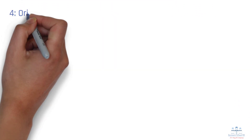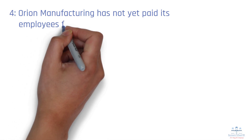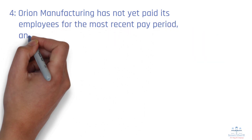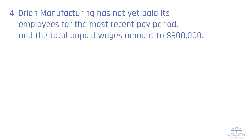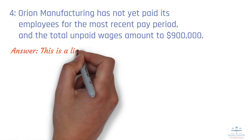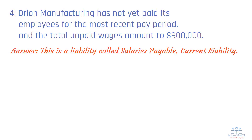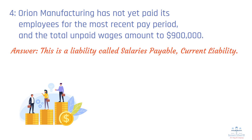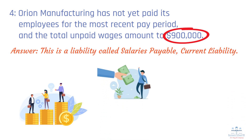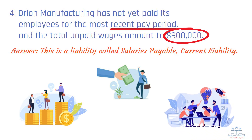Scenario 4: Orion Manufacturing has not yet paid its employees for the most recent pay period, and the total unpaid wages amount to $900,000. Answer: This is a liability called salaries payable, a current liability. Since employees have already worked and provided services, the company has a present obligation to pay them. The amount owed is known — $900,000 from payroll records — and the company will settle it soon. Because salaries are usually paid within weeks, this qualifies as a short-term liability. Unlike the CEO's contract, this situation meets the liability criteria because employees have already performed their work.